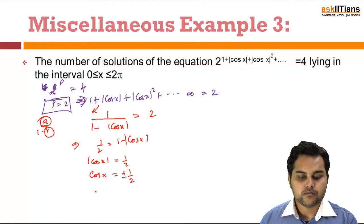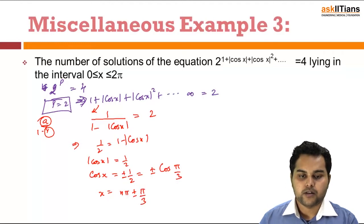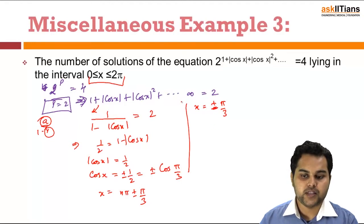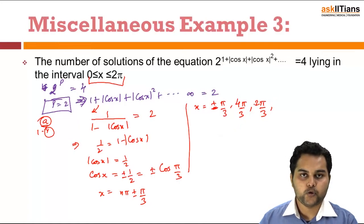This is of the form cos x = ±cos(π/3), so the general solution is x = nπ ± π/3. For solutions in (0, 2π): for n = 0, x = π/3 (and -π/3 is rejected as it's outside the range); for n = 1, x = π + π/3 = 4π/3 and x = π - π/3 = 2π/3; for n = 2, x = 2π + π/3 = 7π/3 which exceeds 2π and is rejected.